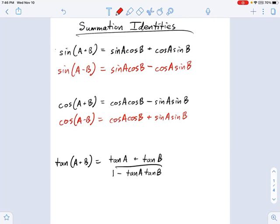Okay, now we're getting into summation identities and how to use these to find sines, cosines, and tangents of angles that are not pretty angles on the unit circle. They're not special things like 30 degrees, 45 degrees, 60 degrees, and so on.